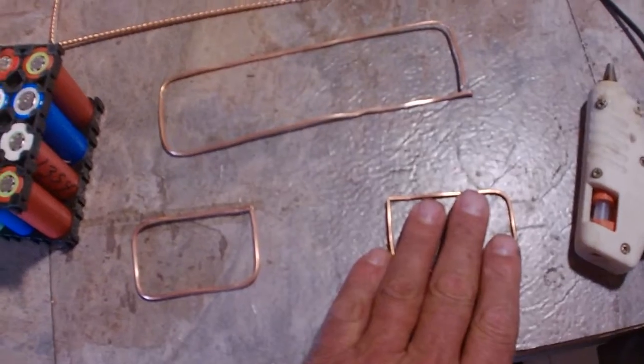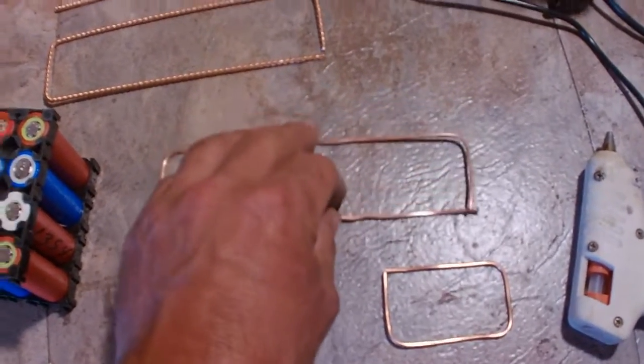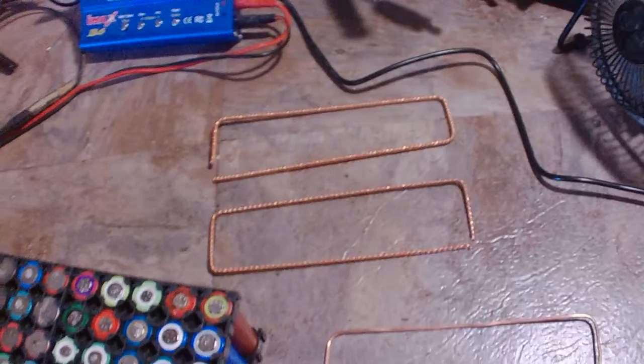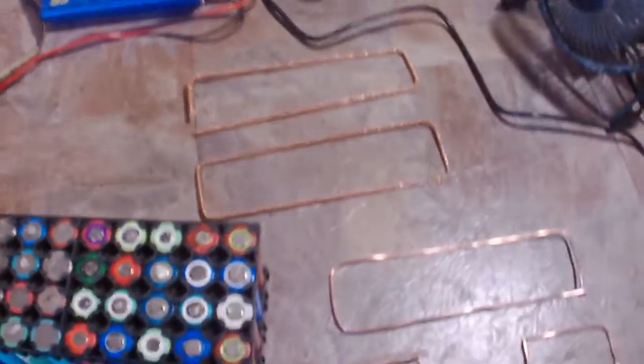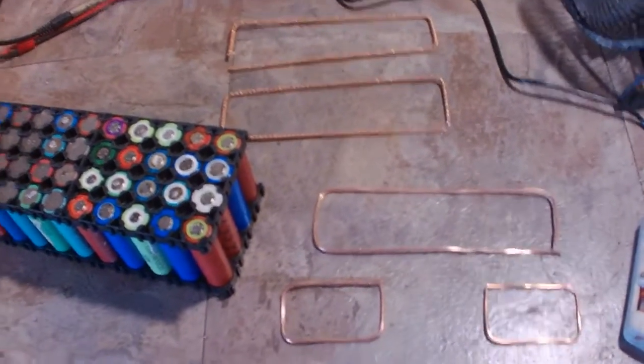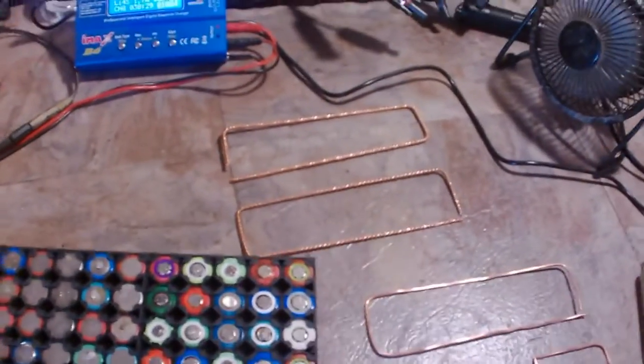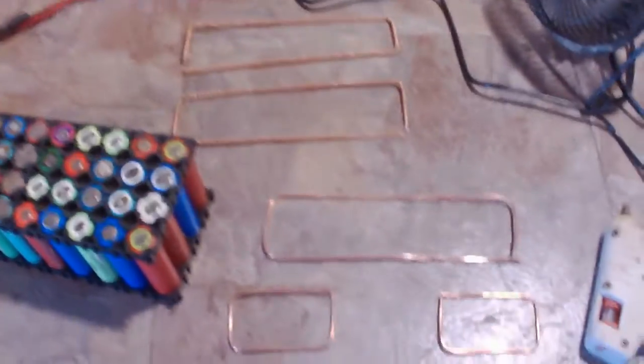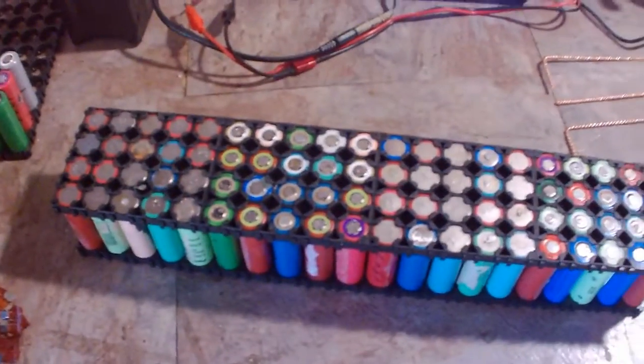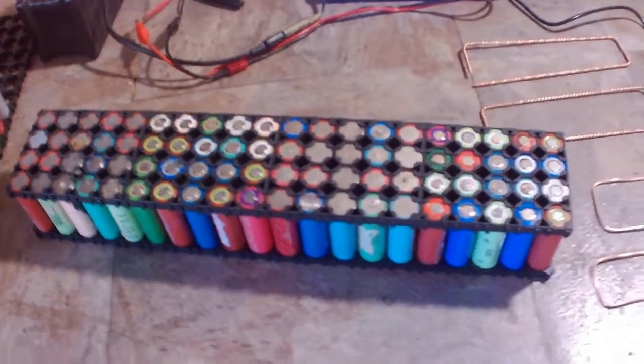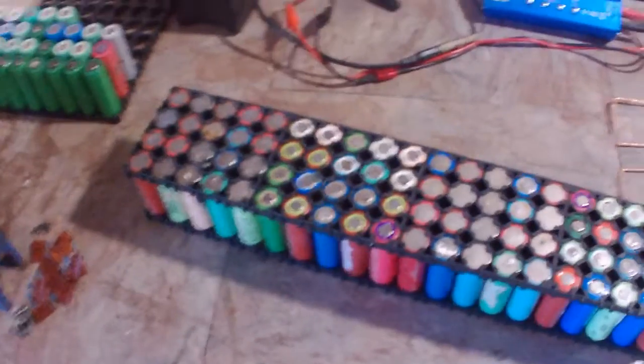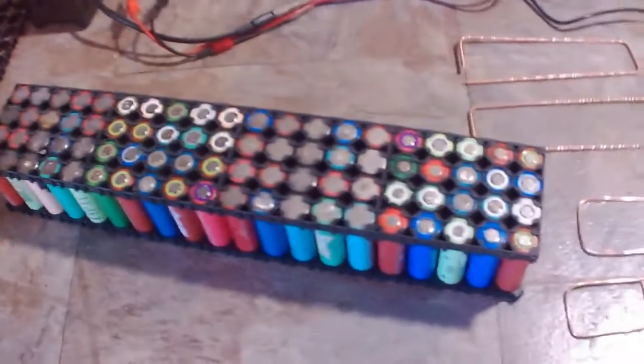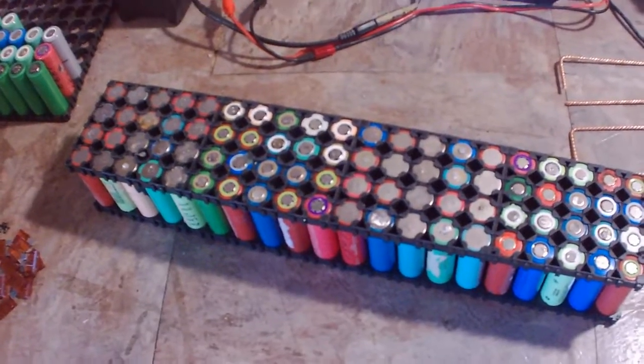So I made these two ends. That's for a positive end, that's for a negative end, that's for in between. And these two here are for the negative side. What it's going to do is travel through it like a letter S. So let me get to it. I'll put the hot glue gun to it and seat them on there before I solder, and I'll show you how I build these packs.